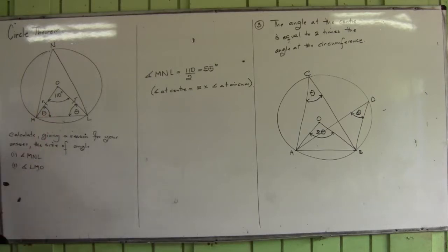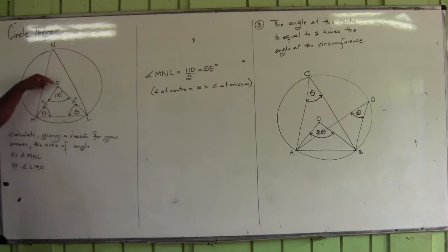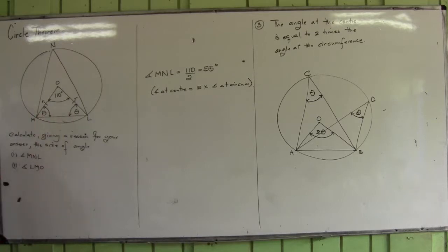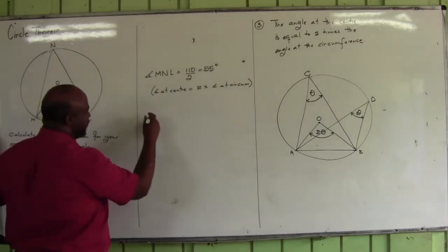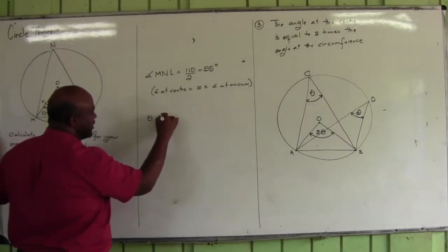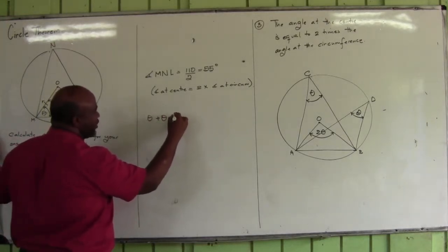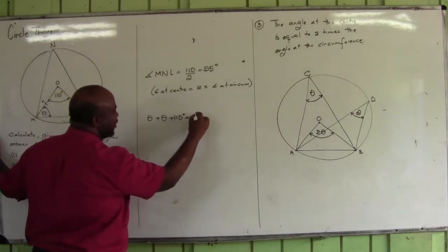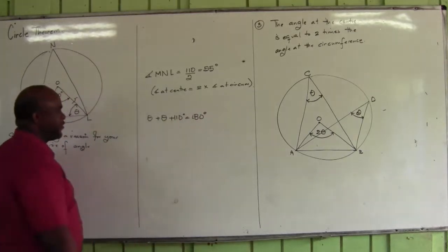The two equal sides of an isosceles triangle meet at the apex. Opposite from the apex is the base. The two base angles of an isosceles triangle are equal. Therefore, can you agree that theta plus theta plus 110 is equal to 180 degrees? Can you agree?